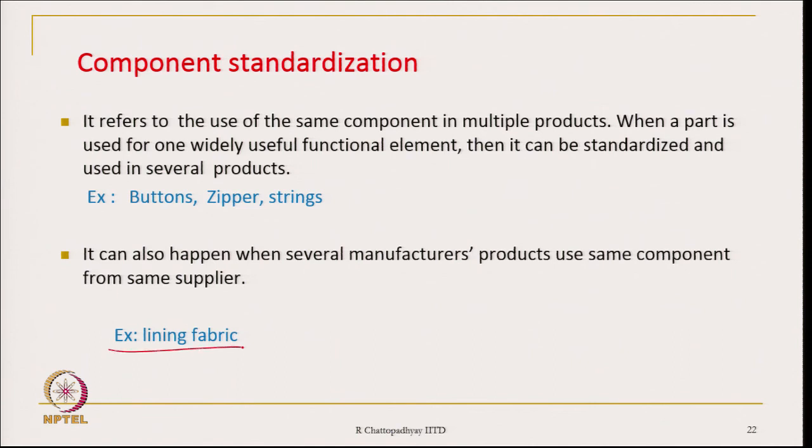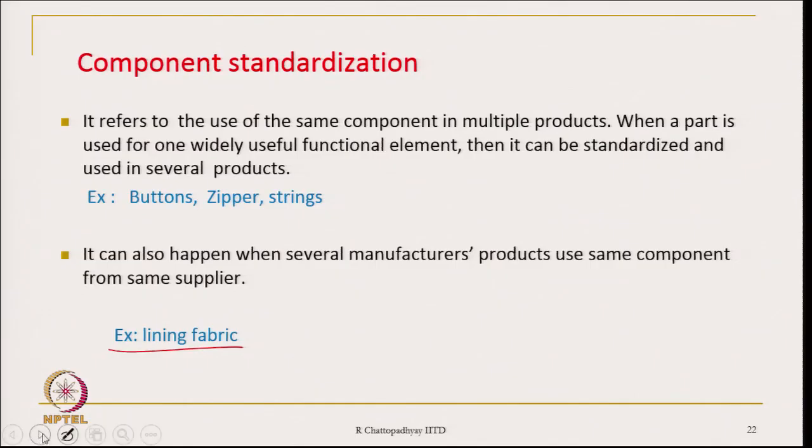An example is lining fabric, which is used in coats, blazers, or blouses. Since everybody is going to use the lining fabric, we can have a standardized specification for lining fabric which can be used by many manufacturers. With this, we close this particular session. This is all about the architecture of textile products — we have discussed a few types of architecture which are generally used.